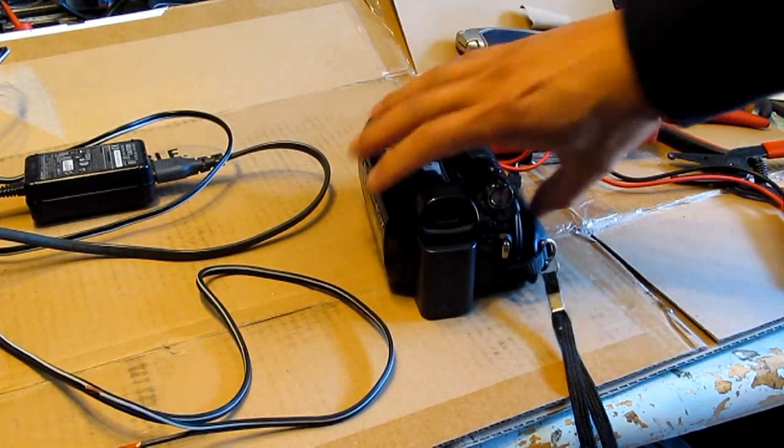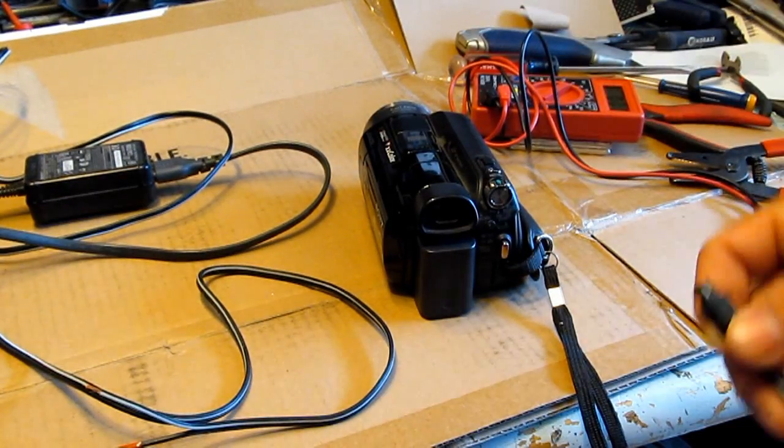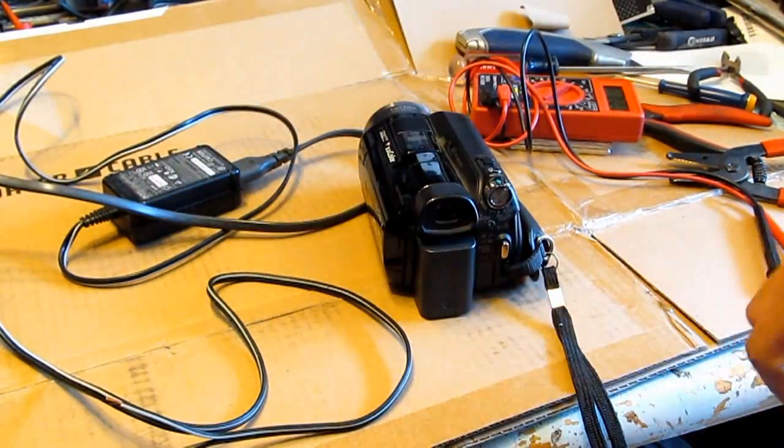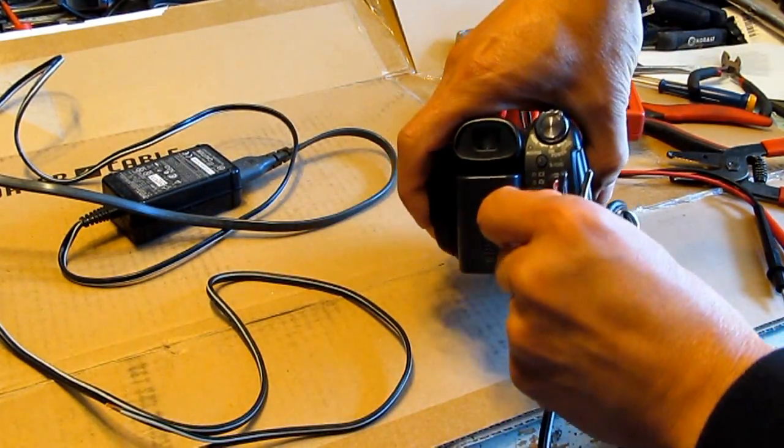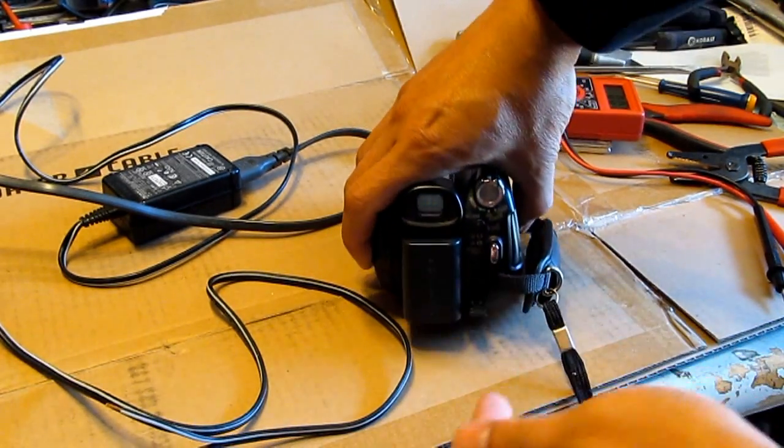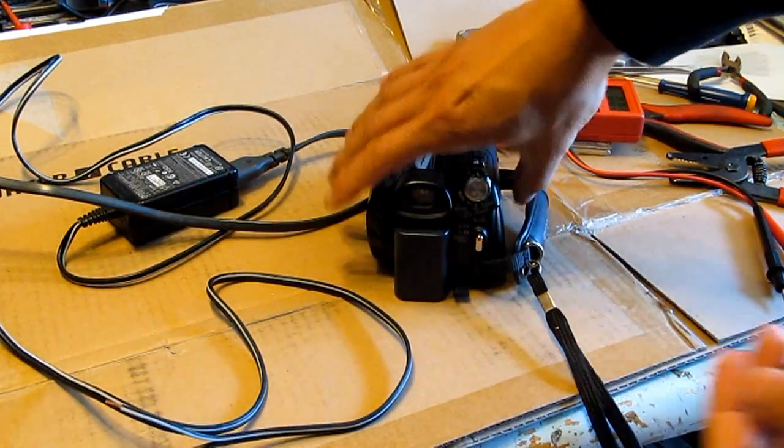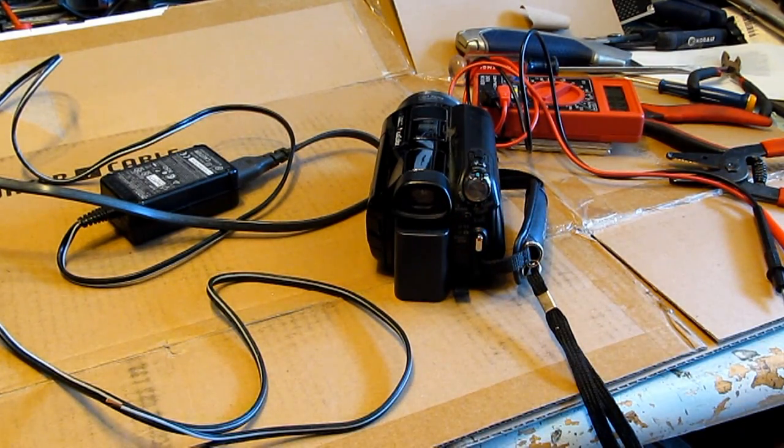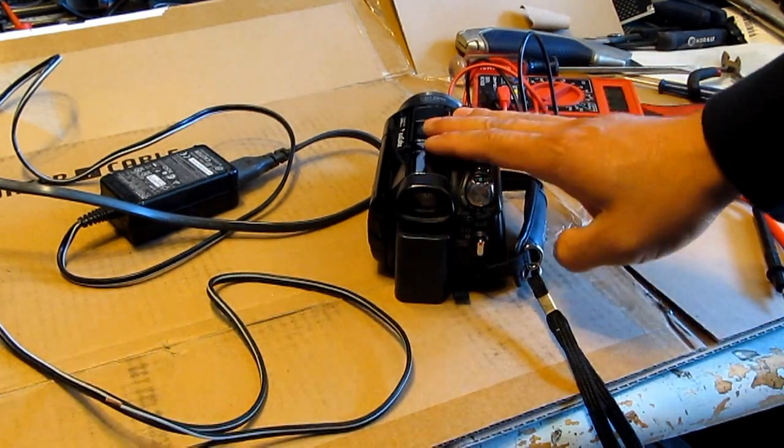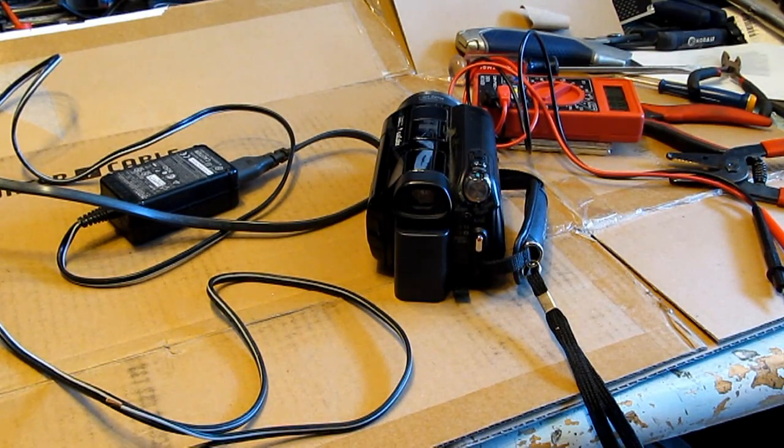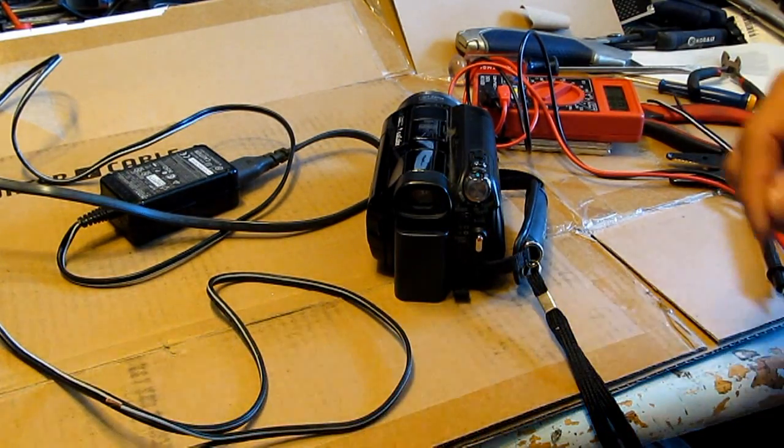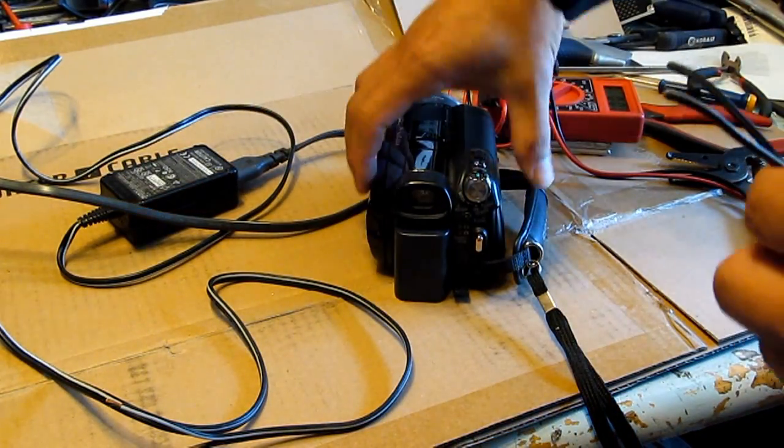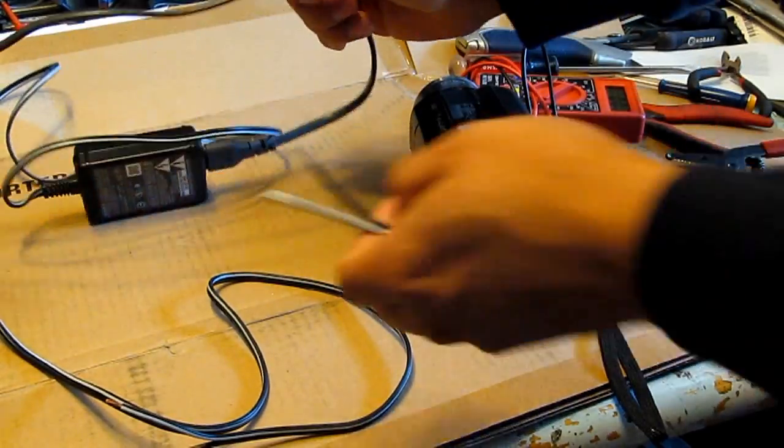This camera has a DC input jack right on the camcorder where you plug in the power adapter and plug it in here on the back of the camcorder to charge the battery right on the camcorder. Some camcorders require you to remove the battery and it has its own charger for the battery, but this one's different. So what I'm going to do is use the wire which came from the AC adapter itself.